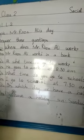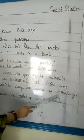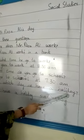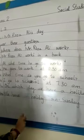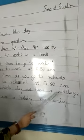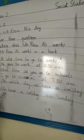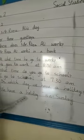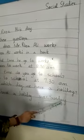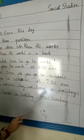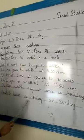Question number 4: on which day do we have a holiday? Kis din hamein chutti hoti hai? Answer: we have a holiday on Sunday. Sunday means itwaar — humein itwaar ke din chutti hoti hai. Thank you.